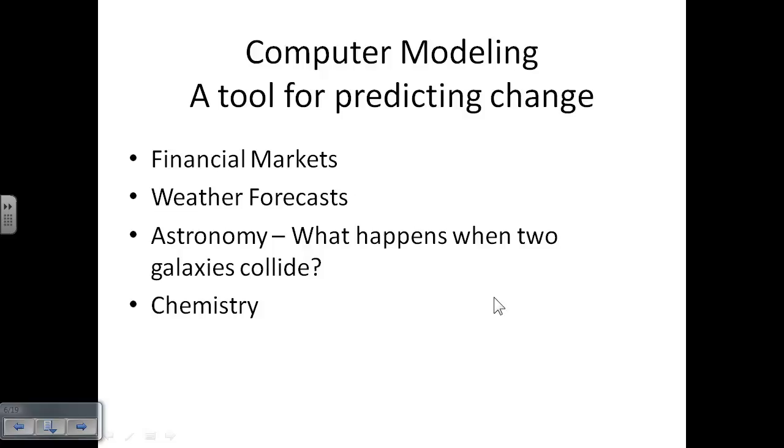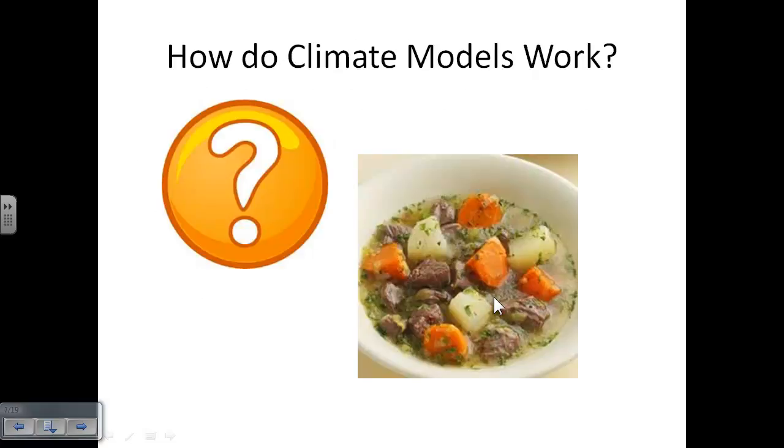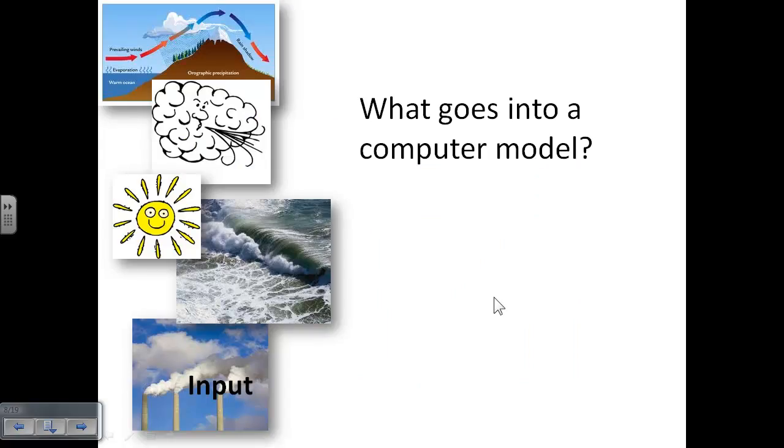In case of global climate change, it's like putting in a number of ingredients that make up our climate and deciding what we're going to get out, somewhat like making a stew. In the case of global climate change, we have to understand a lot of different dynamics. And when you put them into the computer, they're called inputs.